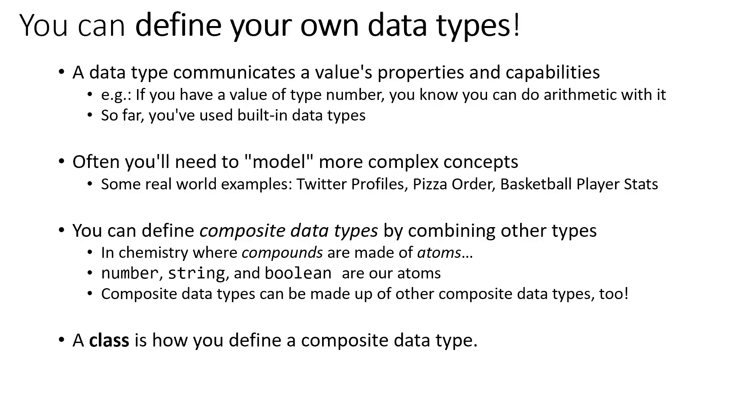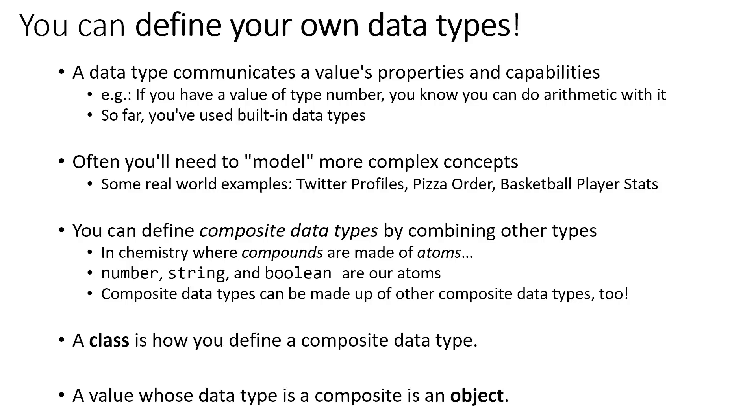A class is how we can define a composite data type, and a value whose data type is composite is called an object.